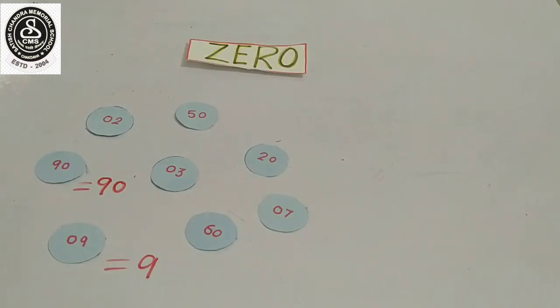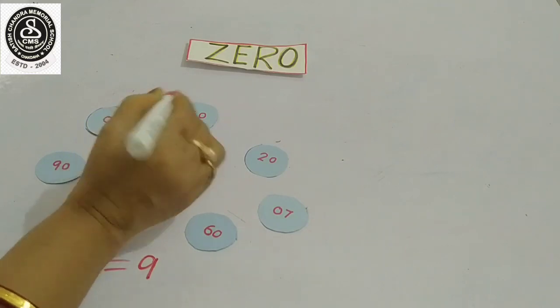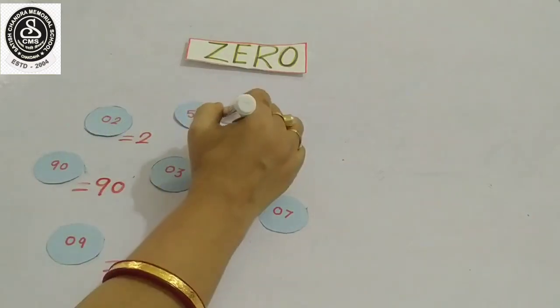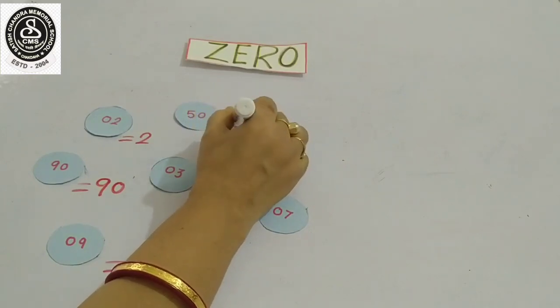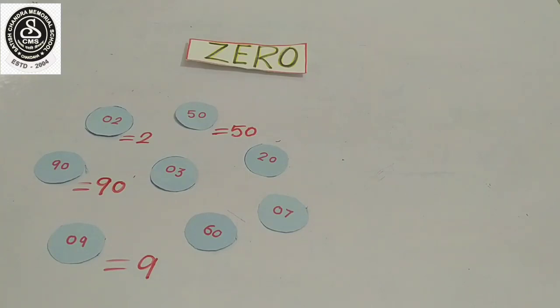And my next number is 0, 2. So 0, 2 is equal to only 2. But my next number is 50. So 50 is equal to 50. In this way you can read all these numbers on your own.